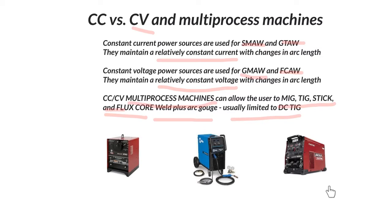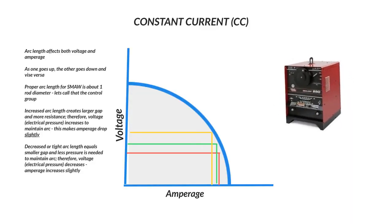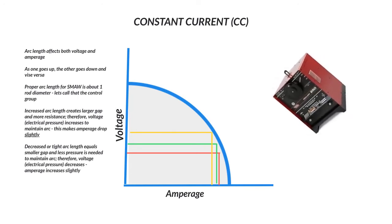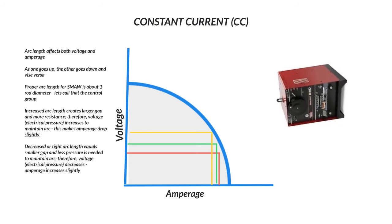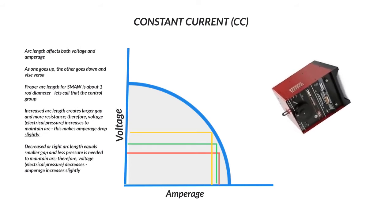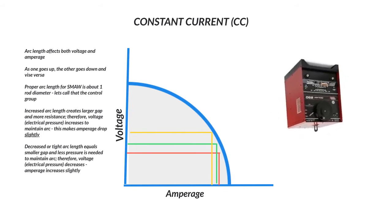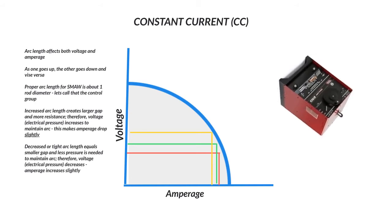We're going to start here with a constant current power source. The machine I chose was the Ideal Arc 250. It's a Lincoln machine. It's a transformer rectifier. And this is really just kind of a stick machine, but you could technically use a power cable adapter and TIG with it.